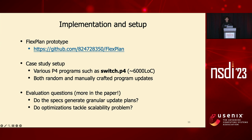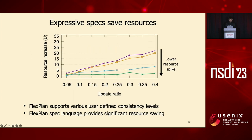We implemented a prototype of FastPlan and open-sourced it. We conducted case studies on various P4 programs like Switch.p4, with both randomly and manually crafted program updates. In this evaluation figure, four curves represent four different specifications expressed by our spec language. The x-axis is the program update ratio and the y-axis is the peak resource spike. As you can see, different specifications lead to vastly different resource spikes during the update.